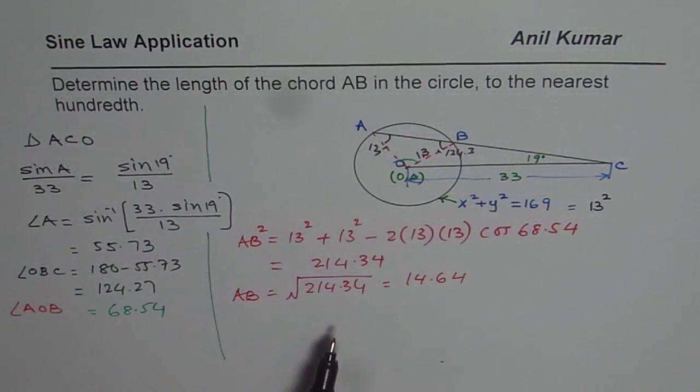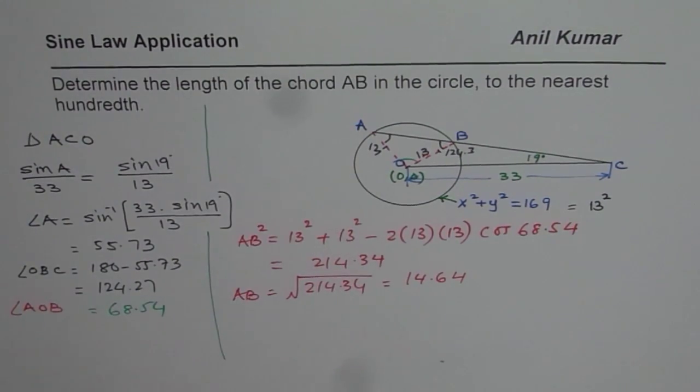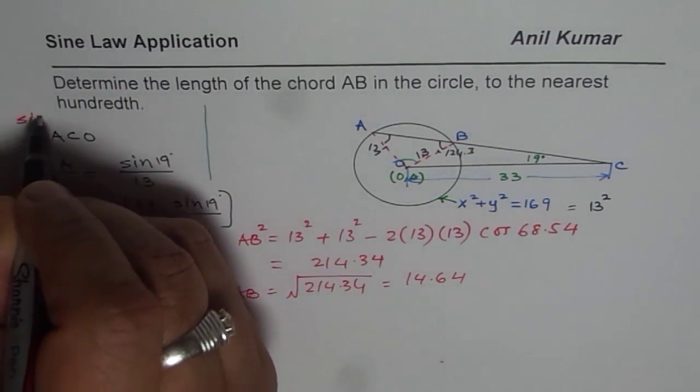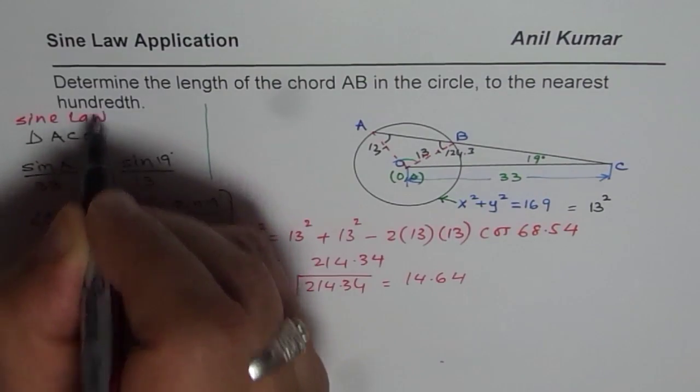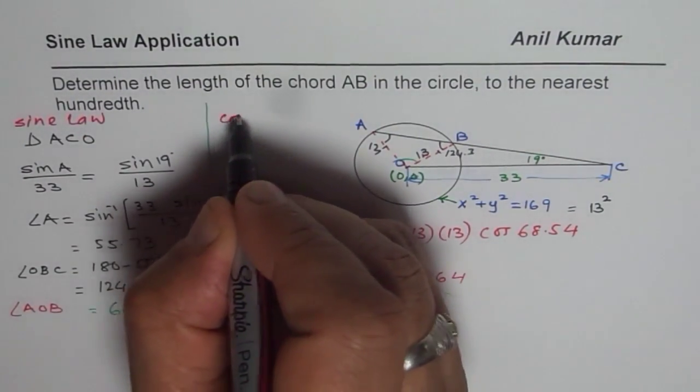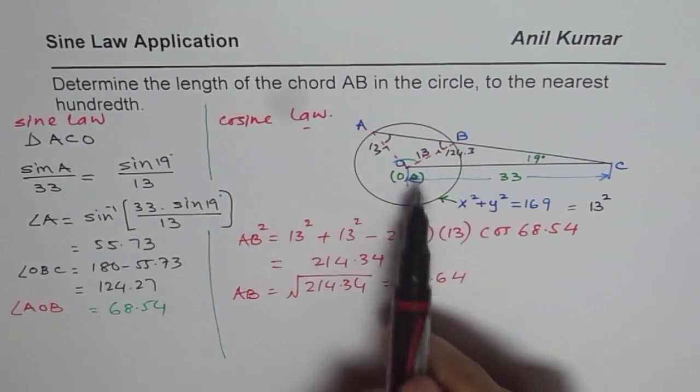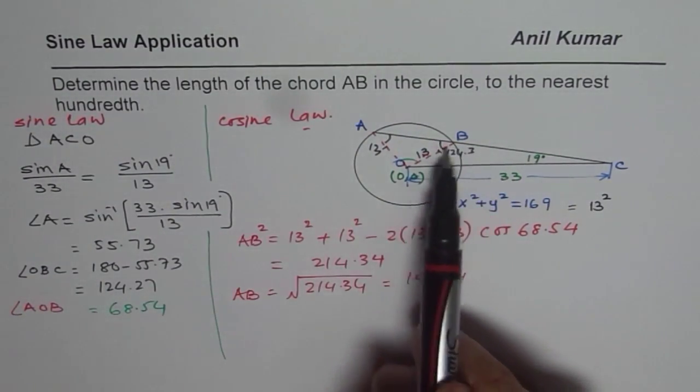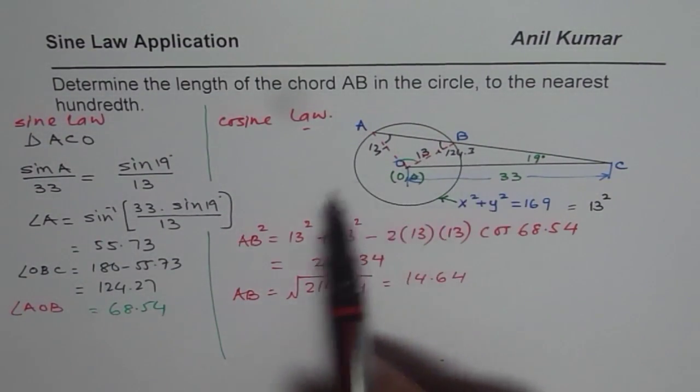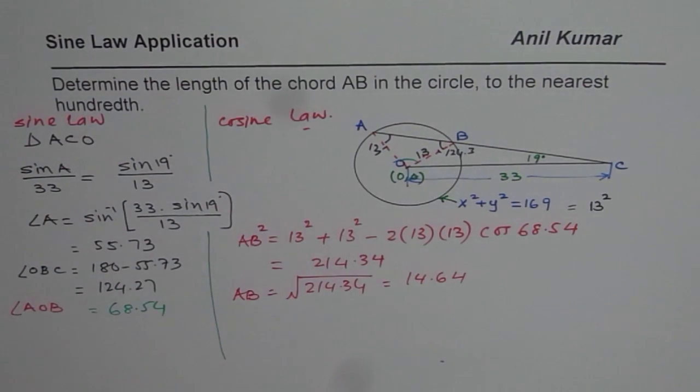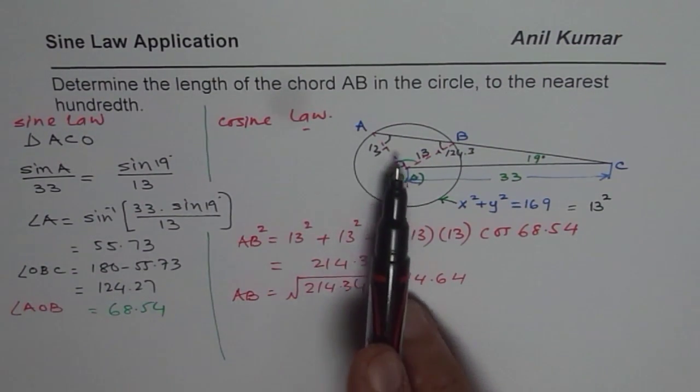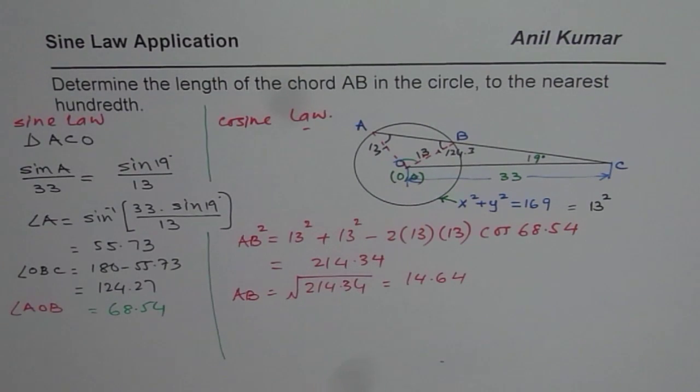So this question we solved using combination of sine law and cosine law. But as I was saying, you can use sine law twice and then also find the answer for the given question. I hope that helps. But this method is preferred. So I'd like you to use sine law and cosine law to find the length of the chord AB as we did in this particular case.